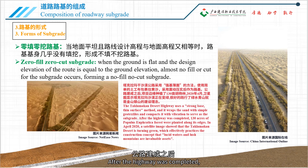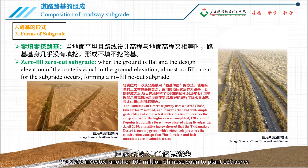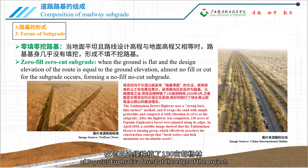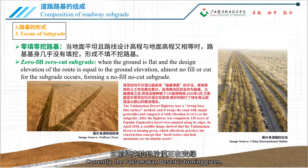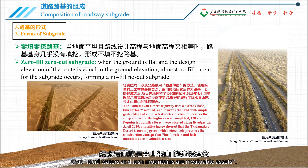After the highway was completed, the state invested another 100 million Chinese yuan to plant 130 acres of Populus Euphratica forest at the edge of the project. Currently, the Taklamakan Desert is turning green, which effectively practices the construction concept that lucid waters and lush mountains are invaluable assets.